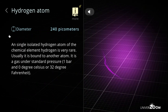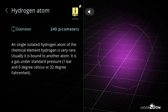Hydrogen atom diameter: 240 picometers. A single isolated hydrogen atom of the chemical element hydrogen is very rare. Usually it is bound to another atom. It is a gas under standard pressure of one bar and zero degrees Celsius or 32 degrees Fahrenheit.